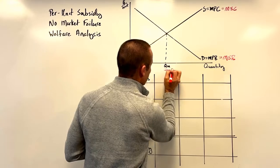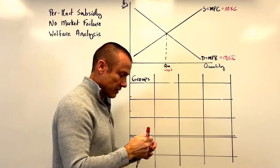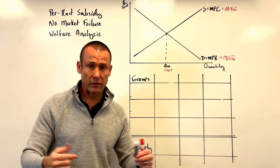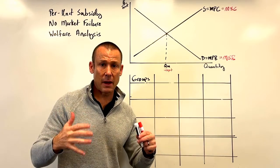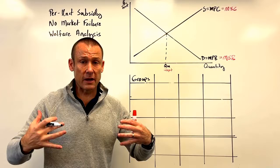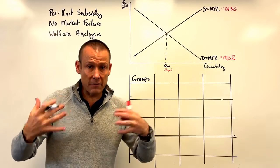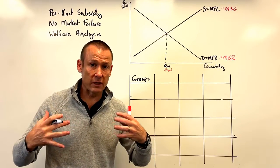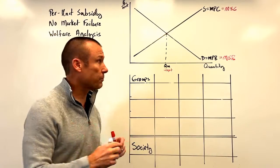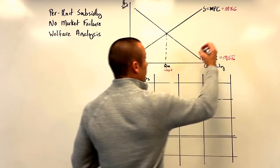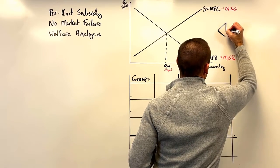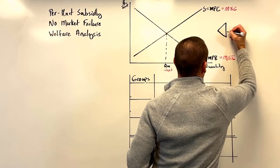We're going to choose to intervene anyway — maybe for political reasons. Consumers or producers of this good have political clout and are able to lobby the legislative body to get a per unit subsidy. So we bring in our per unit subsidy, using our modeling tool known as the subsidy wedge.